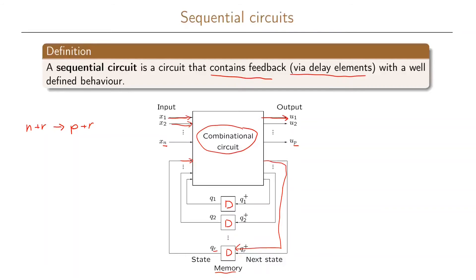The state, as we have defined it, is the set of outputs from the d-elements. And the next state, which we define using for example our truth tables, is given by the inputs to our d-elements.